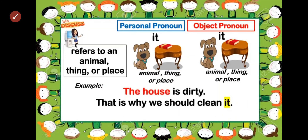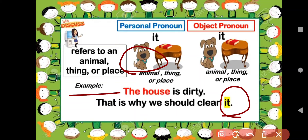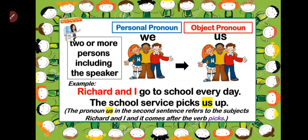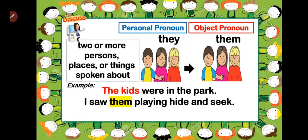The house is dirty — that is why we should clean it. The house is the subject; we always use 'it' for things or places. Next: Richard and I go to school every day — the school service picks us up. When two or more persons including the speaker are referred to, we use 'we' as the subject pronoun and 'us' as the object pronoun. Finally, when we have 'they' as the subject pronoun, we use 'them' as the object pronoun. The kids were in the park — I saw them playing hide and seek. 'Kids' means 'they,' and the object pronoun is 'them.'